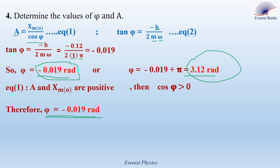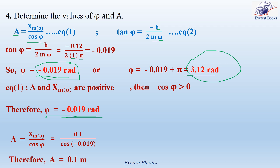Now let's calculate a. Using equation 1, a = xm₀/cos φ. With xm₀ = 0.1 m and φ = −0.019 radians, the answer is a = 0.1 meters.